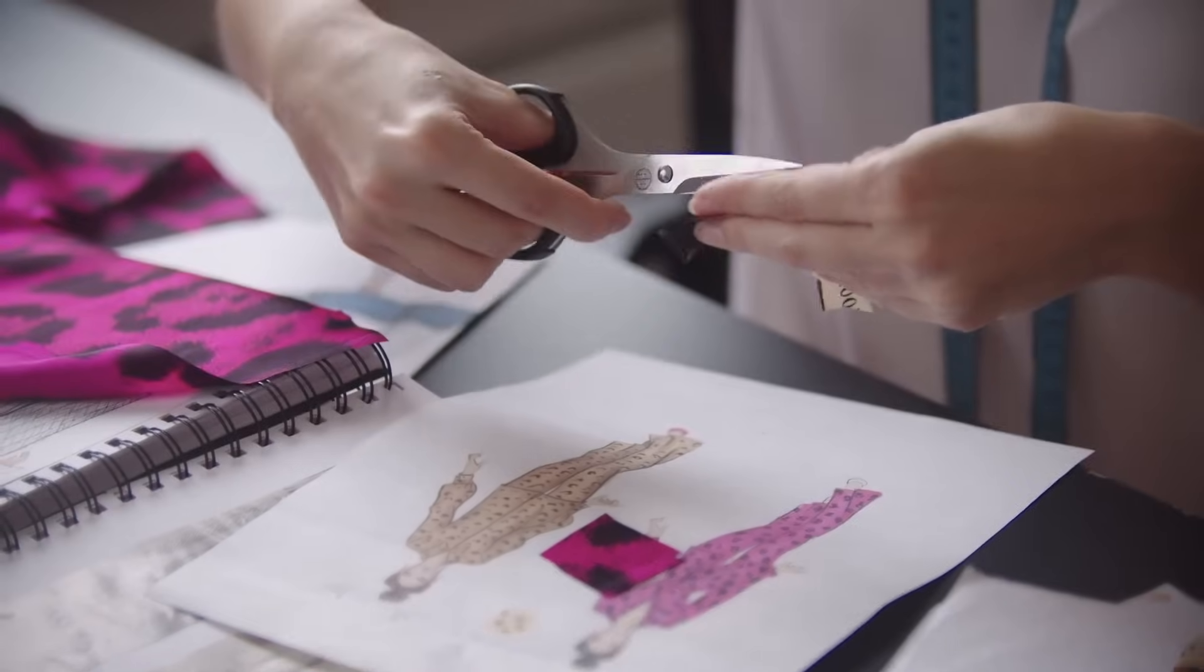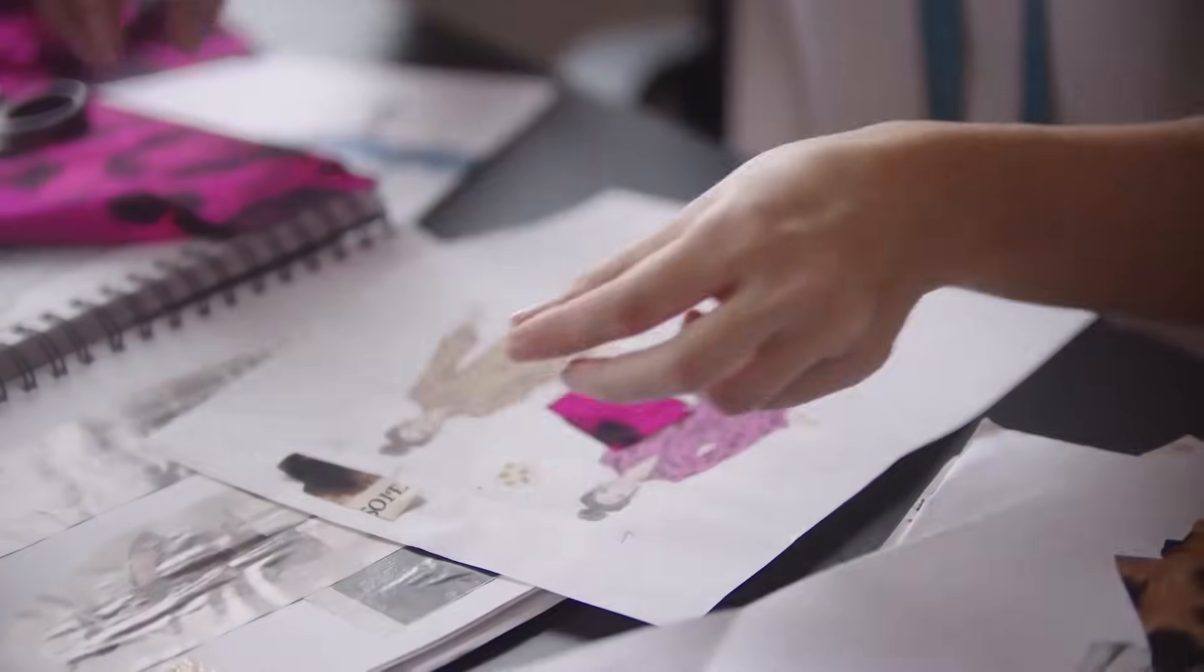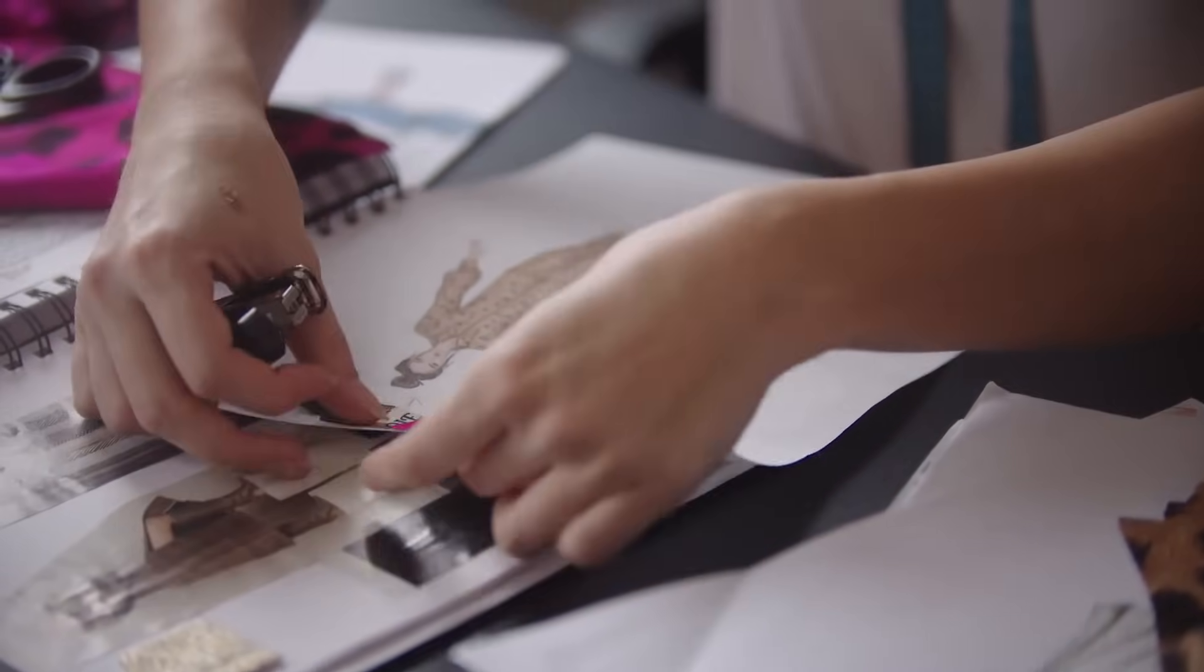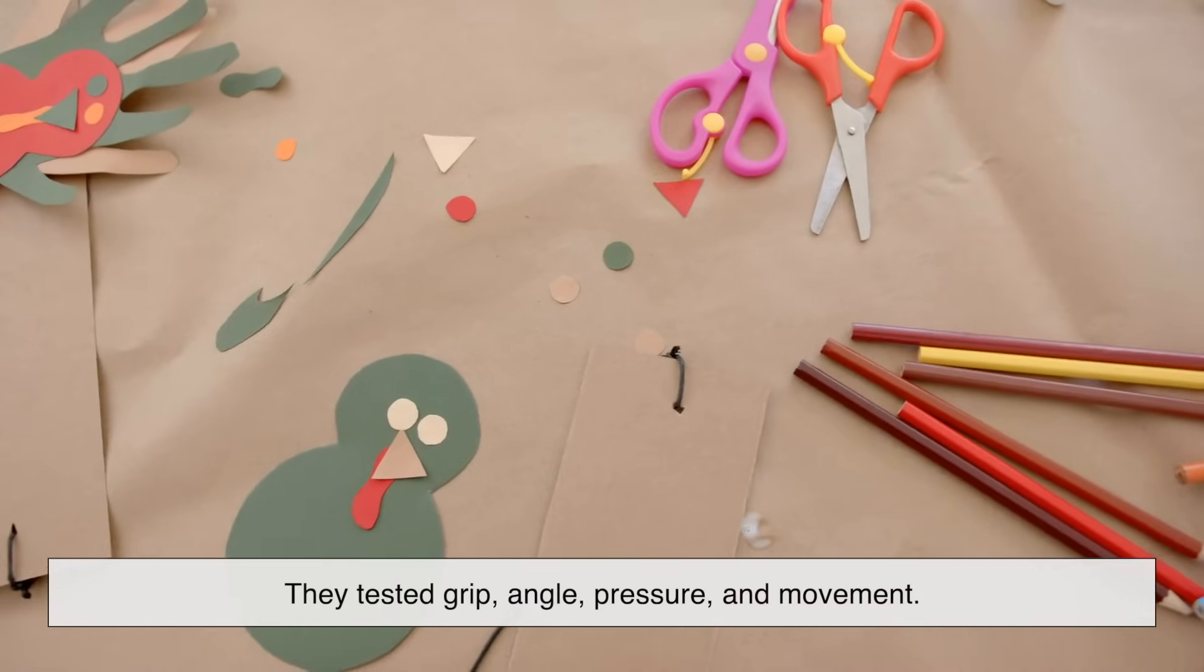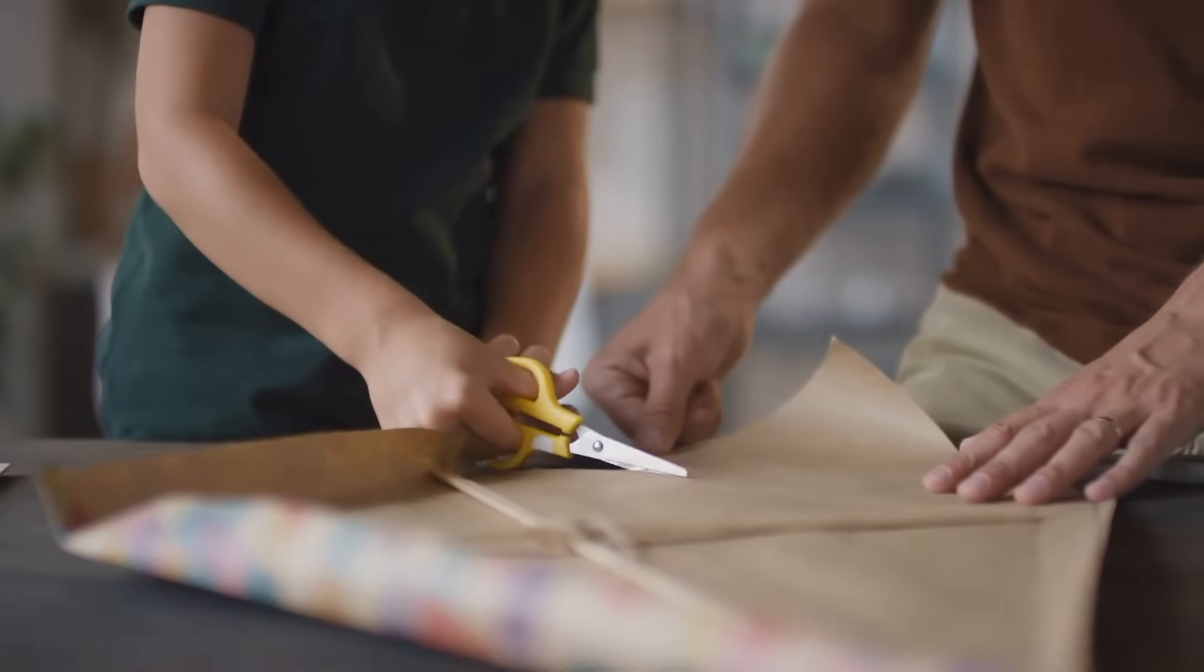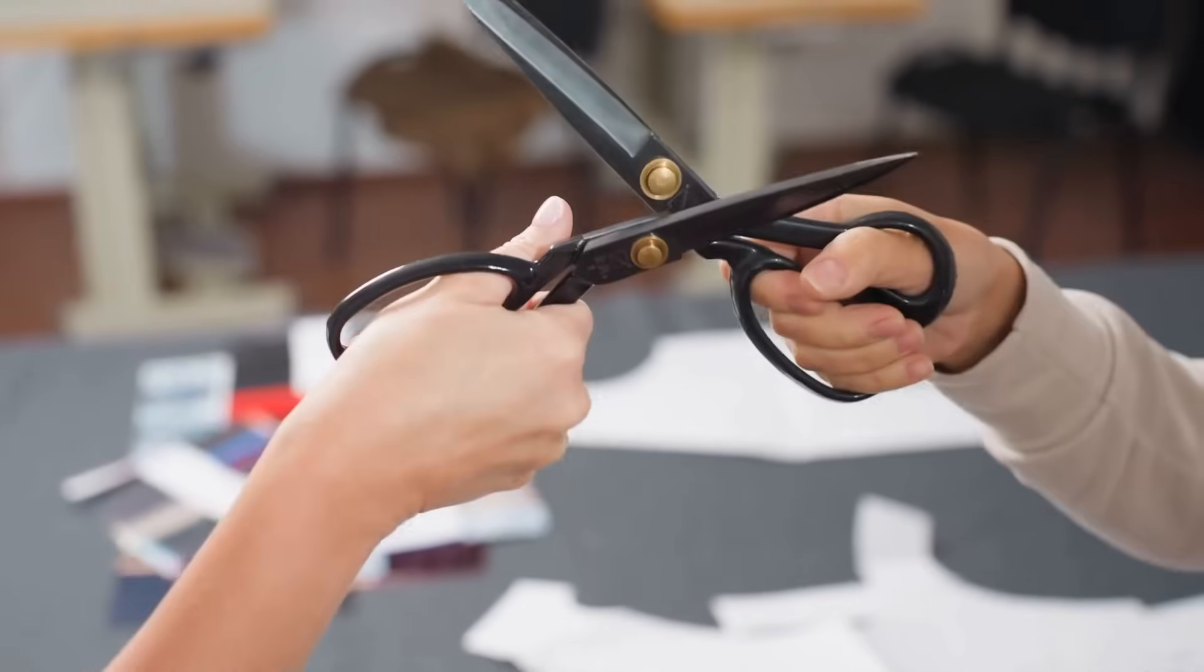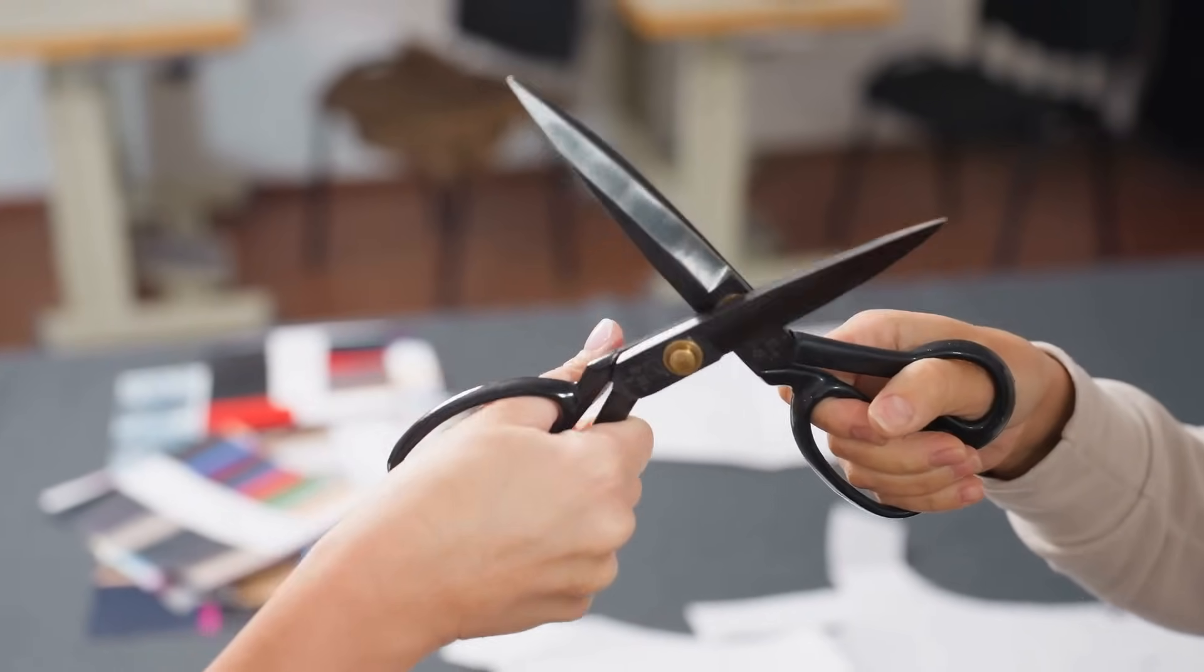The bigger loop on scissors is a perfect example of intuitive, human-centered design, something we often take for granted. Designers and manufacturers didn't just guess when making one hole bigger. They studied how hands work. They tested grip, angle, pressure and movement. Over time, the scissors we use today emerge from centuries of refinement. And now, you can pick up a pair and cut with ease, rarely stopping to consider that one little design choice that makes all the difference.